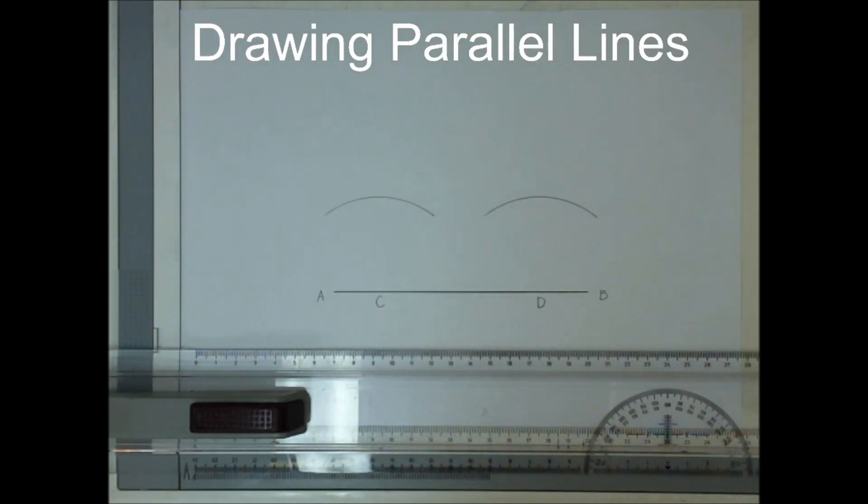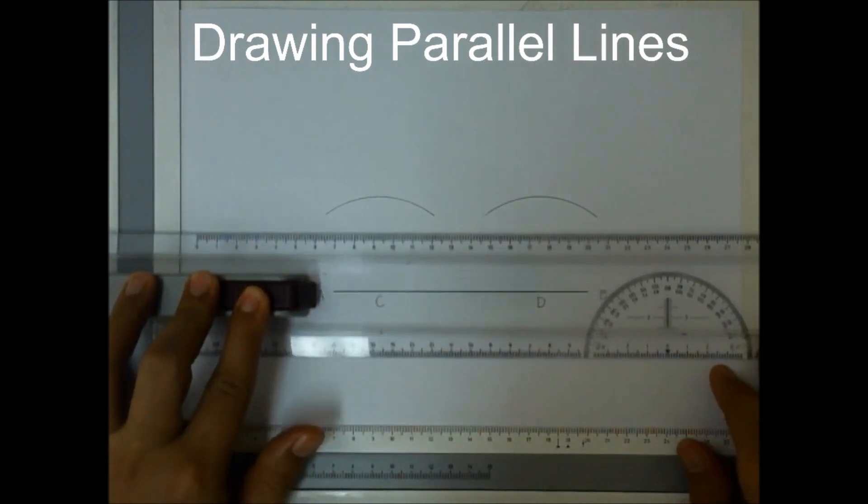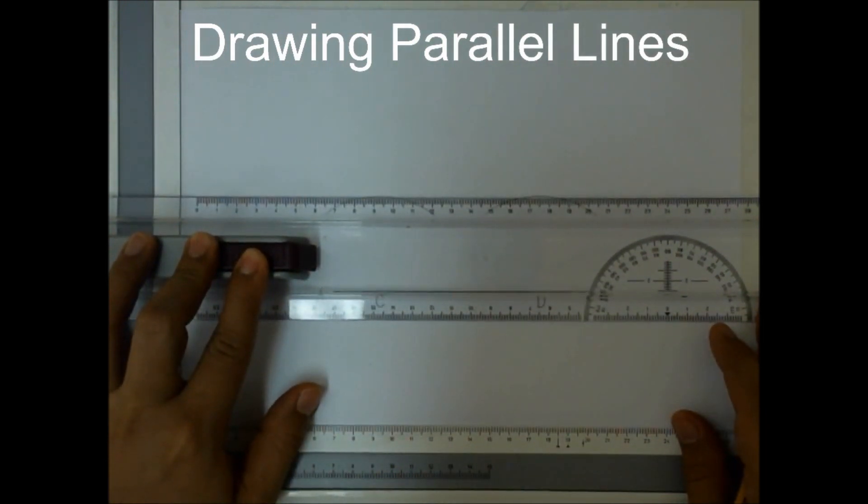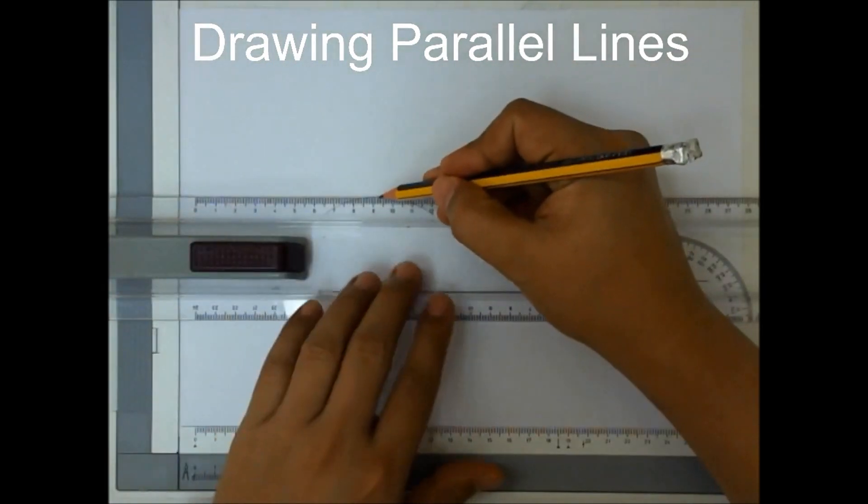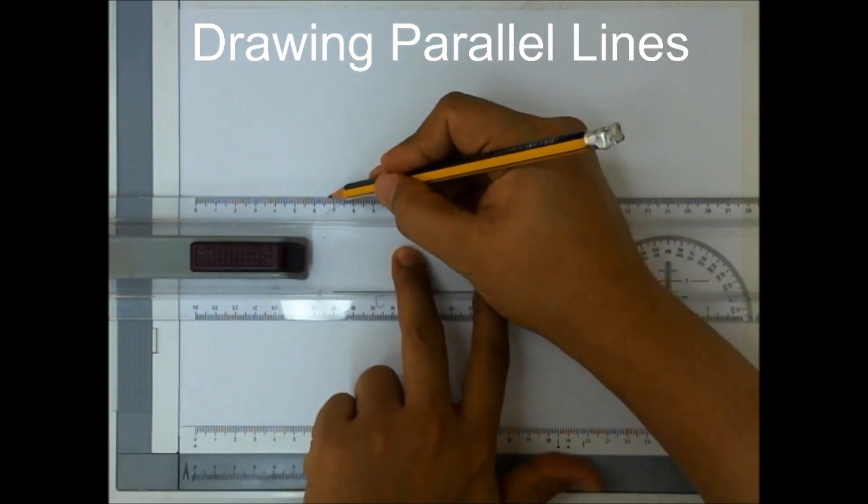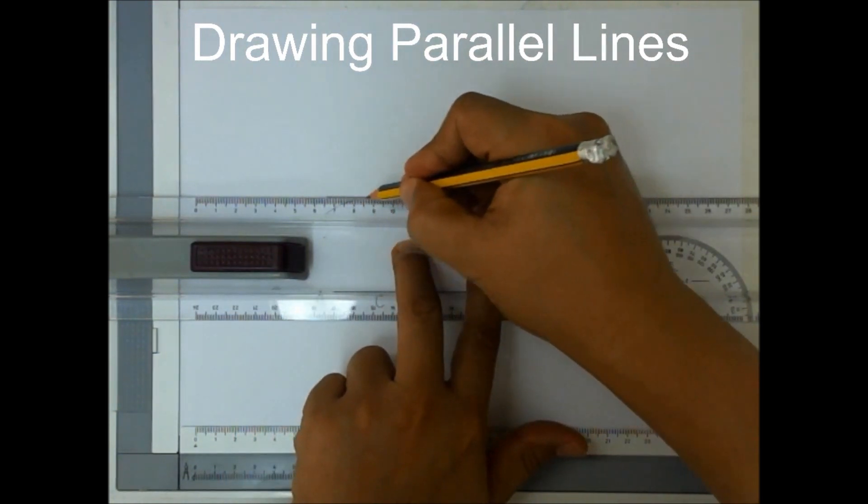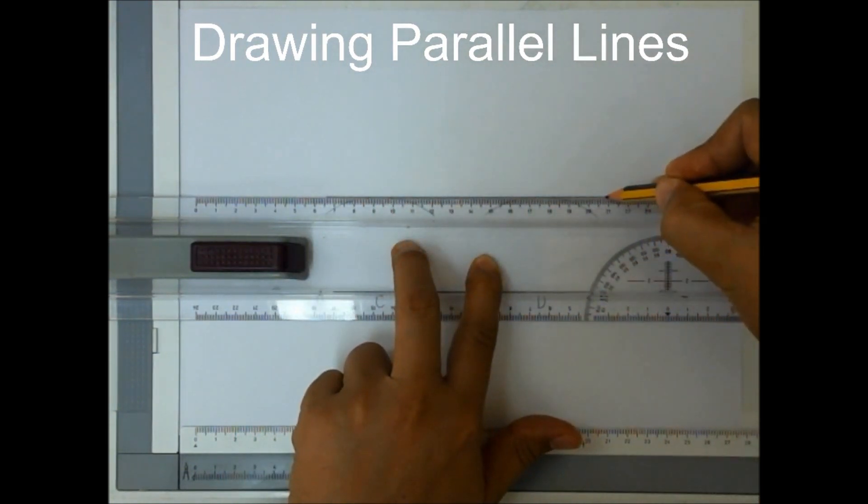And then with the help of your T square, draw a horizontal line connecting these two arcs from this point up to this point.